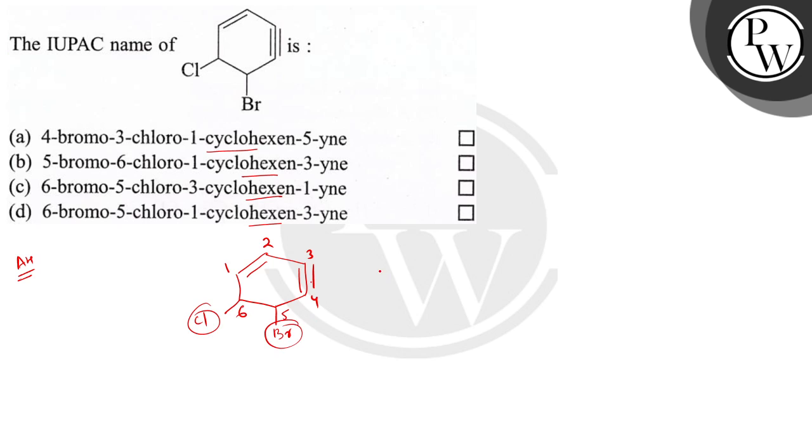So alphabetically, bromo will come first. So it is 5-bromo-6-chloro, and this is 1-cyclohexene.